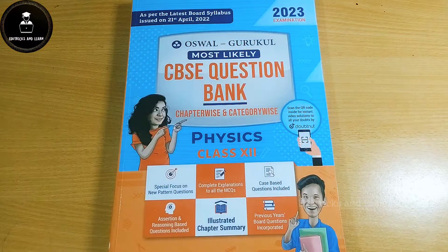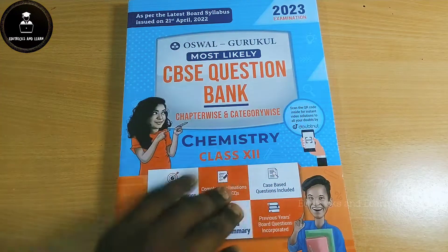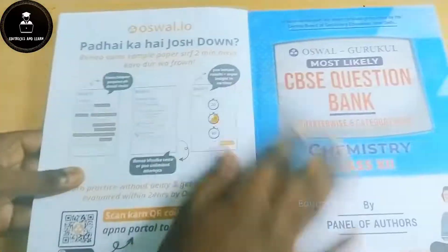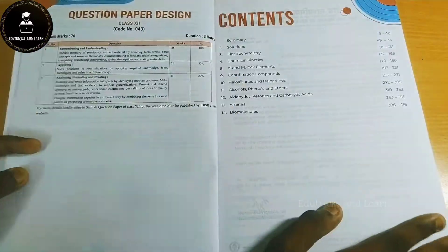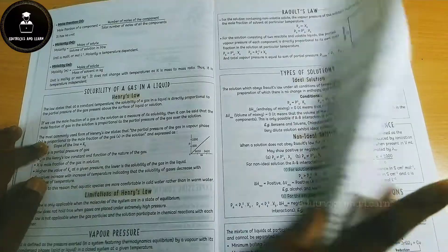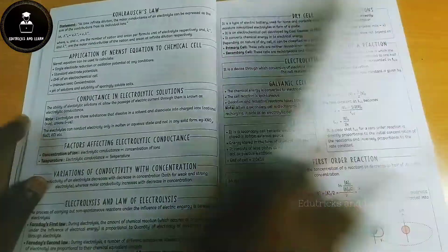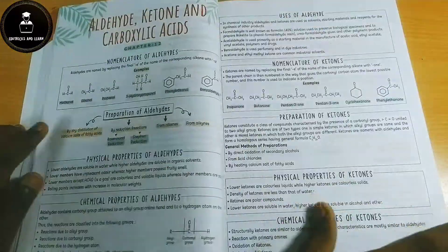Let's see about Chemistry Question Bank. This is Oswal Gurukul Most Likely CBSE Question Bank for Chemistry. The rate of the book is Rupees 489. First they are starting with the syllabus, question paper design, and content. Here also they've given very short type notes in the initial pages of this book.